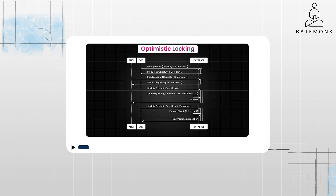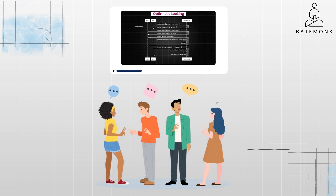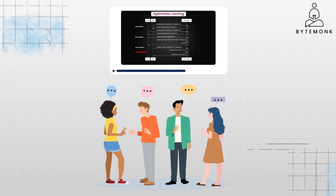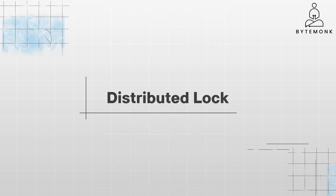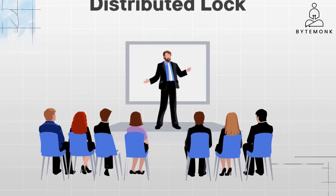In my previous video, I explained some of the real world use cases of optimistic locking. Now, compared to distributed locking, think of optimistic locking as a polite conversation where people assume they won't be interrupted and only apologize if they accidentally talk over each other. Distributed locking, on the other hand, is like a formal meeting with a strict agenda and a designated speaker who controls the floor to prevent anyone from interrupting.